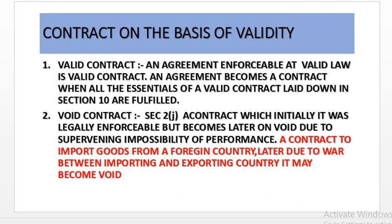Contract on the basis of validity — first is valid contract. Valid means for becoming a valid contract, it should have agreement. Agreement means one party gives the offer to the other party and the other party accepts. Second, it should be legally enforceable. Legally enforceable means suppose in a contract there are two parties and one party breaches the terms; the other party, called the aggrieved party, has the remedy to go to the court. That agreement which is legally enforceable, where parties have legal remedy to go to court for legal implementation — that becomes a valid contract.